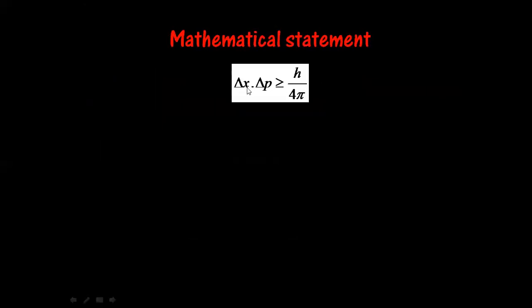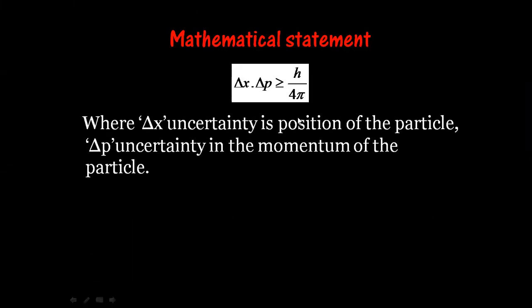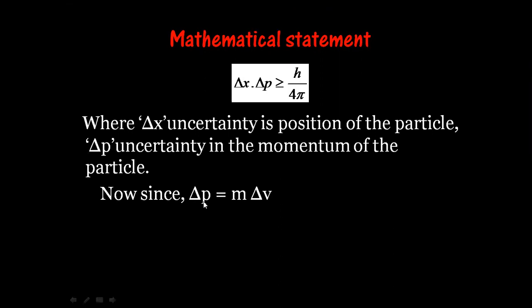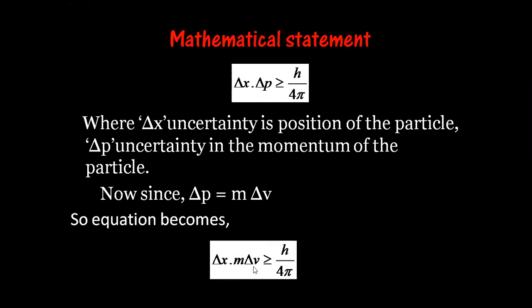The mathematical statement is: Δx · Δp ≥ h/4π, where Δx is the uncertainty in position of the particle and Δp is the uncertainty in the momentum of the particle. Since momentum is mass times velocity, and mass is taken as the rest mass (so it doesn't change), Δp = m·Δv. Substituting into the equation gives: Δx · m·Δv ≥ h/4π. This first relationship relates uncertainty in position and momentum; the second relates uncertainty in position and velocity.